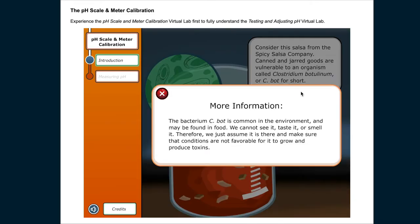The bacterium C. bot is common in the environment and may be found in food. We cannot see it, taste it, or smell it. Therefore, we just assume it is there and make sure that conditions are not favorable for it to grow and produce toxins.